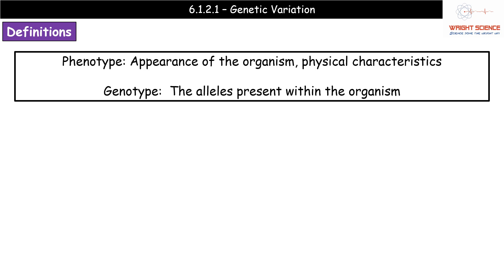The first thing we need to understand is a couple of definitions. These should be familiar to us from GCSE: phenotype and genotype. Whenever we're talking about the phenotype, this is the physical characteristics, the actual appearance of that organism — something like brown hair. The genotype refers to the alleles that are present within the organism, basically what alleles actually lead to that particular characteristic.